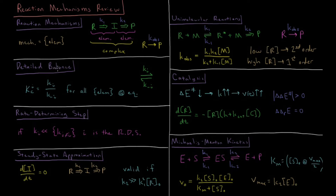The principle of detailed balance says that the equilibrium constant for a given elementary chemical reaction is equal to the ratio of its forward and reverse reaction rates for all elementary steps at equilibrium. So if this first step were reversible, we'd have K1 as the rate constant in the forward direction and K-1 as the rate constant in the reverse direction.